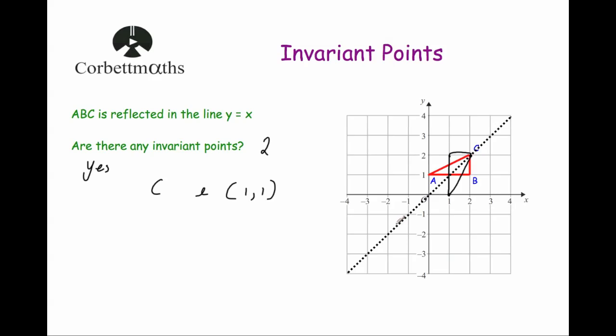That was a nice question to show that it's not always the vertices — the corners A, B, or C — that are invariant. It can be other points on the shape that might be invariant also.